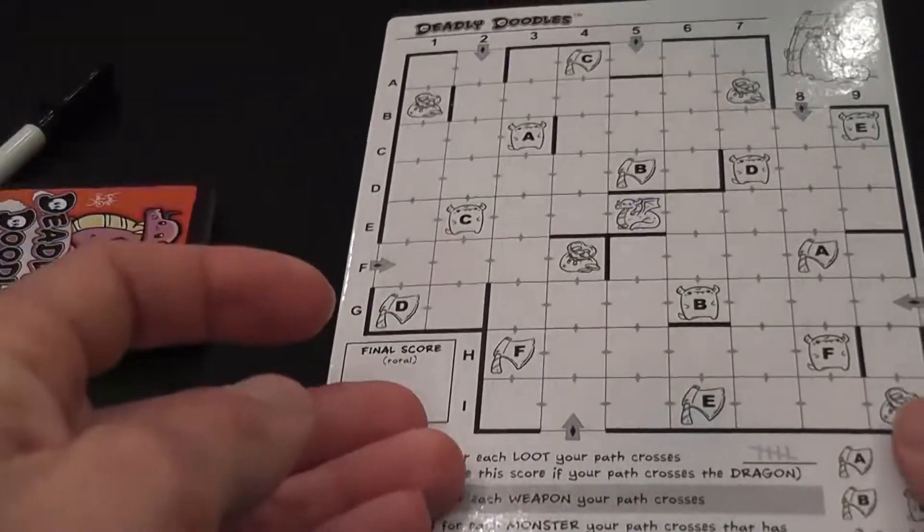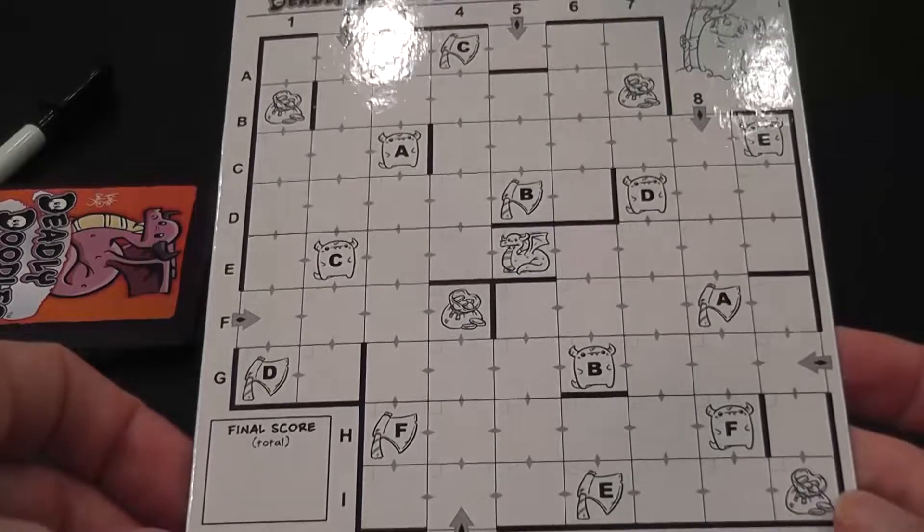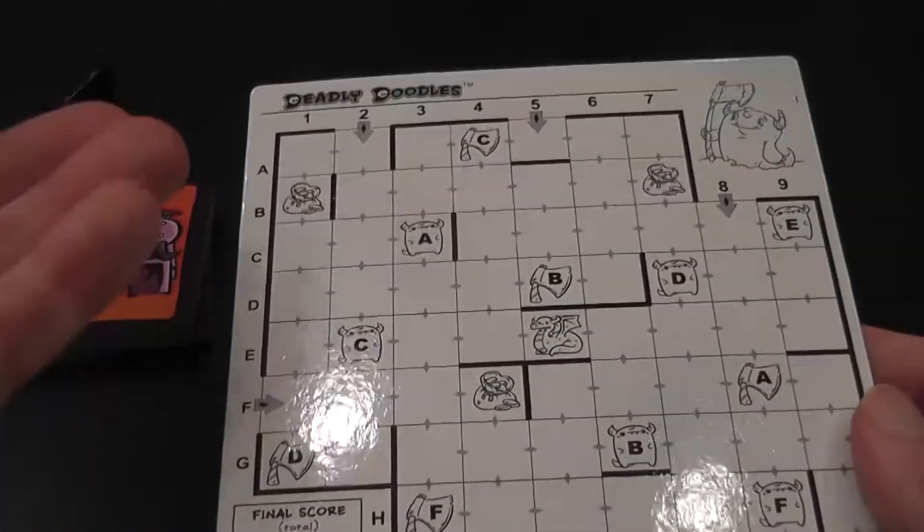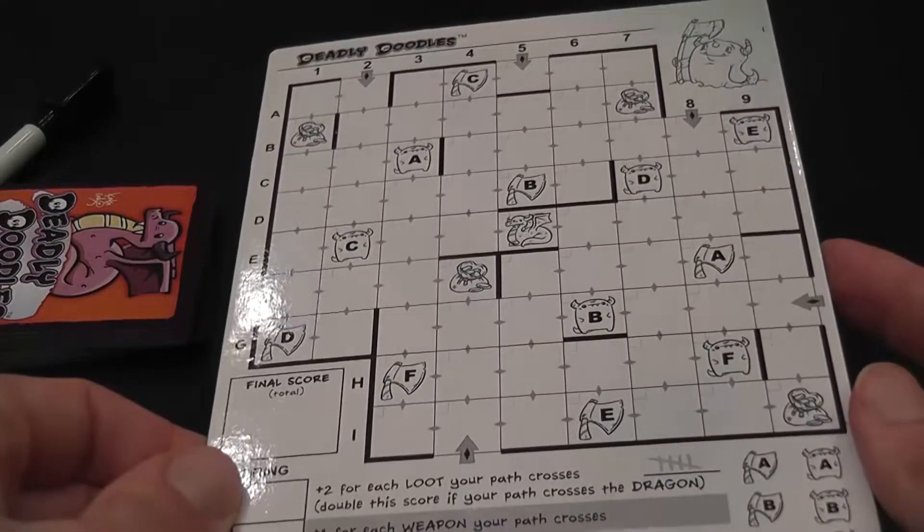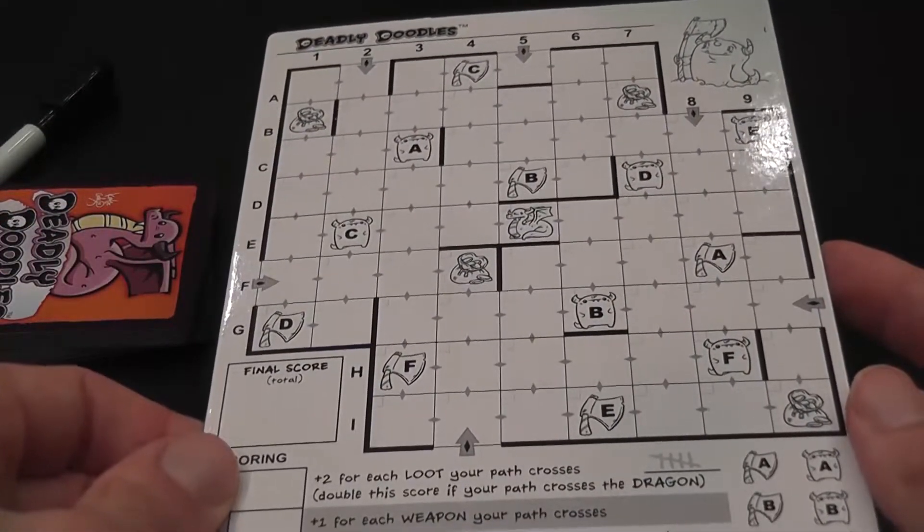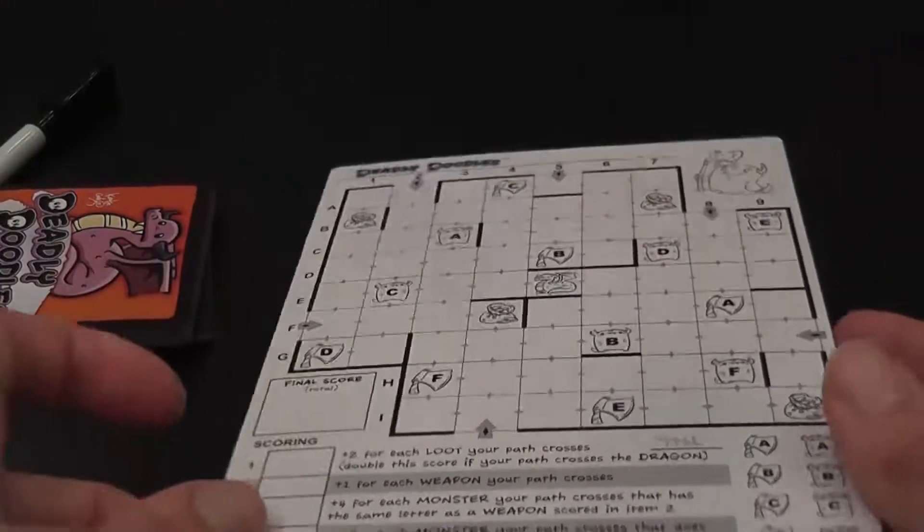Each player has a dry erase board representing the dungeon on one side and nothing relevant on the other. That is kind of like a missed opportunity to give us two different dungeons. I play recently the game Metro X, which also is a draw and draw game and it has two different maps on the two sides.